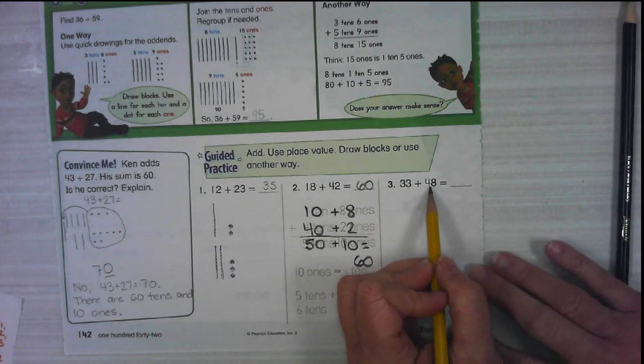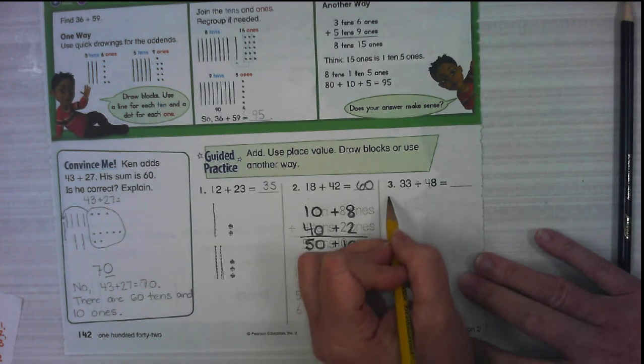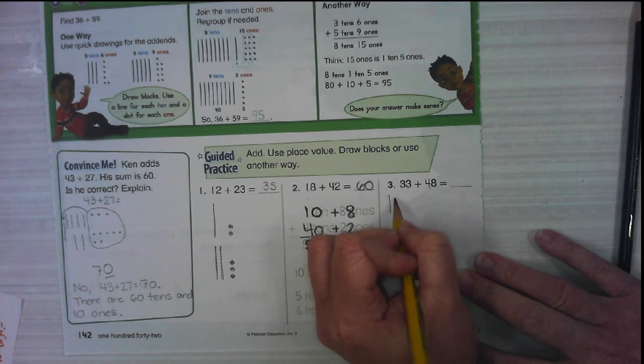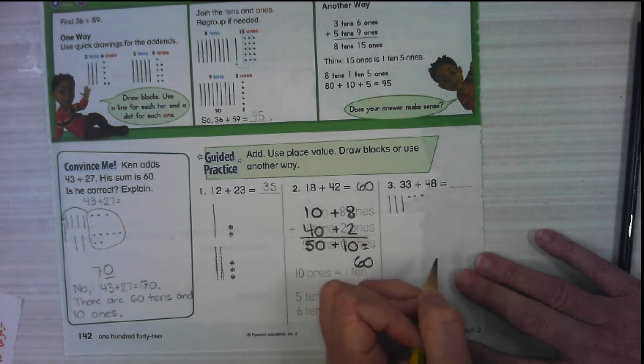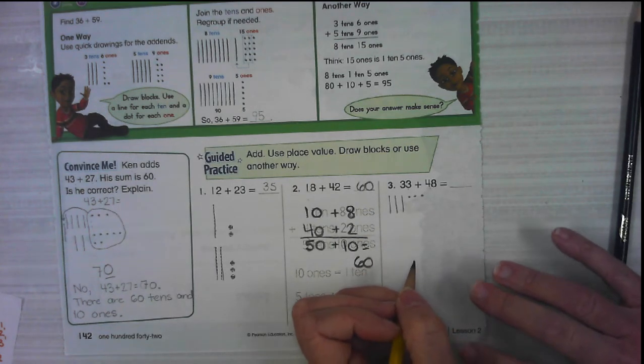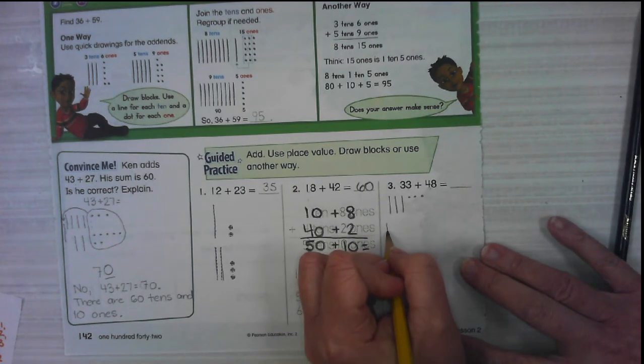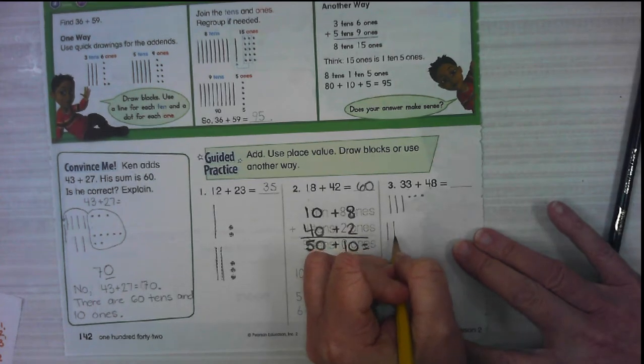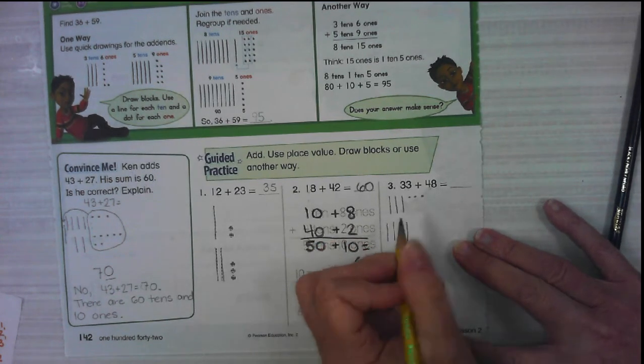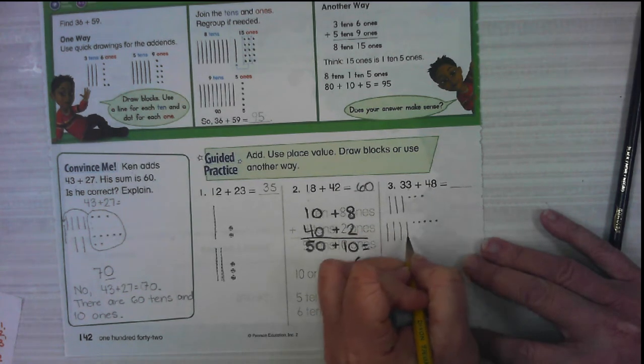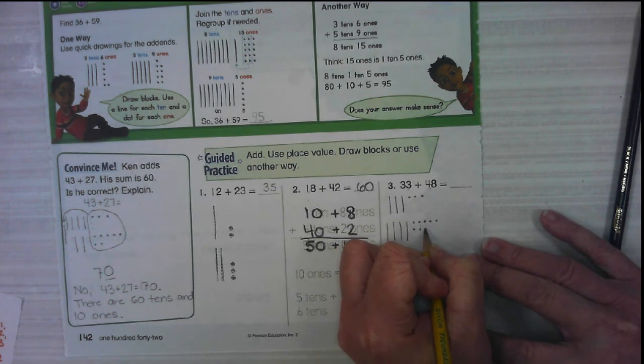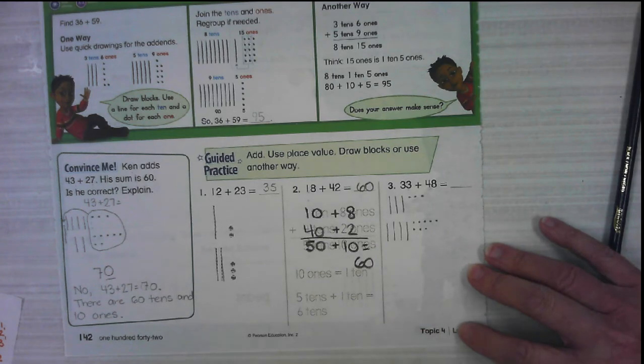We're going to do this one with both of the ways, 33 plus 48. So I'm going to first model 33. You do not have to do it both ways. You do what's the best way for you. We are not going to add the numbers by stacking them up. We call that the standard algorithm. We're not there yet. So of the ways that you've learned at school, you can choose your way as long as you can show it on your paper.